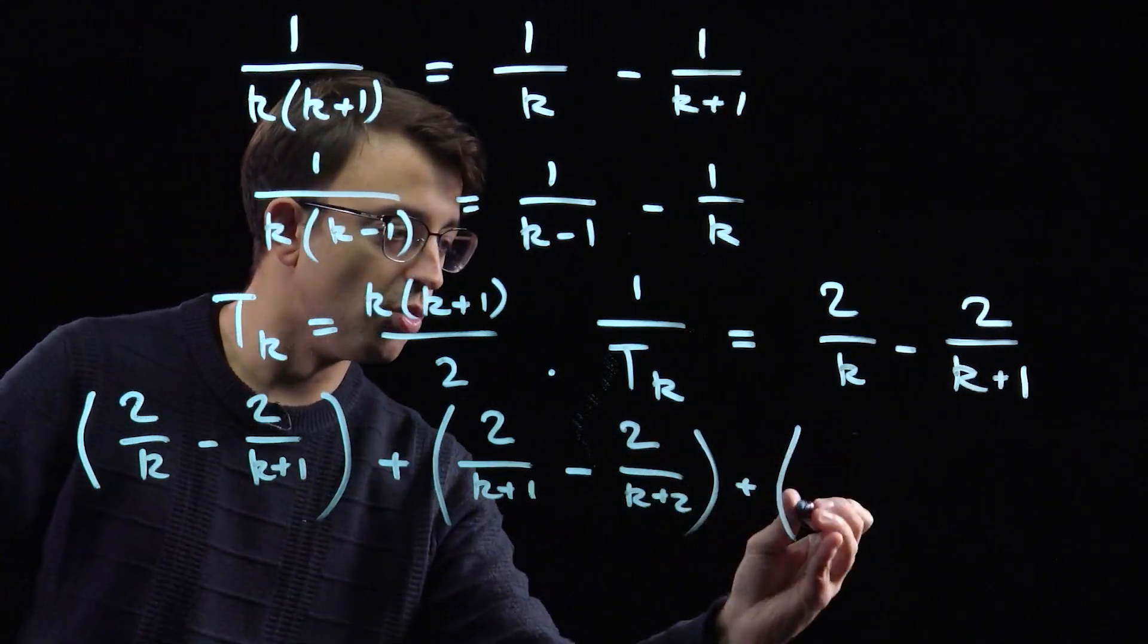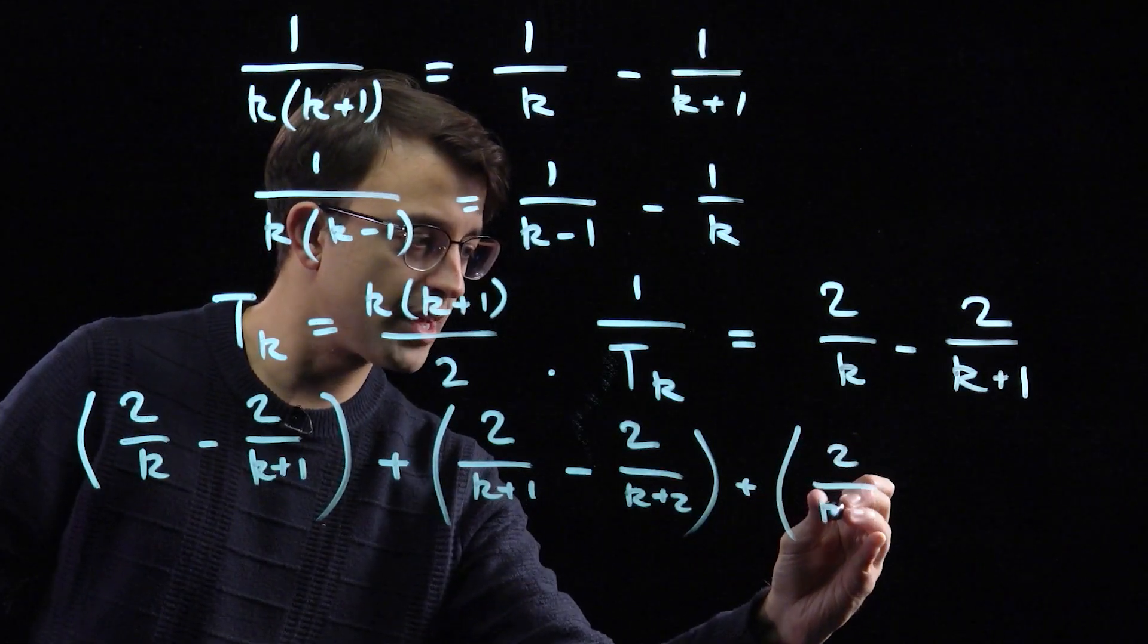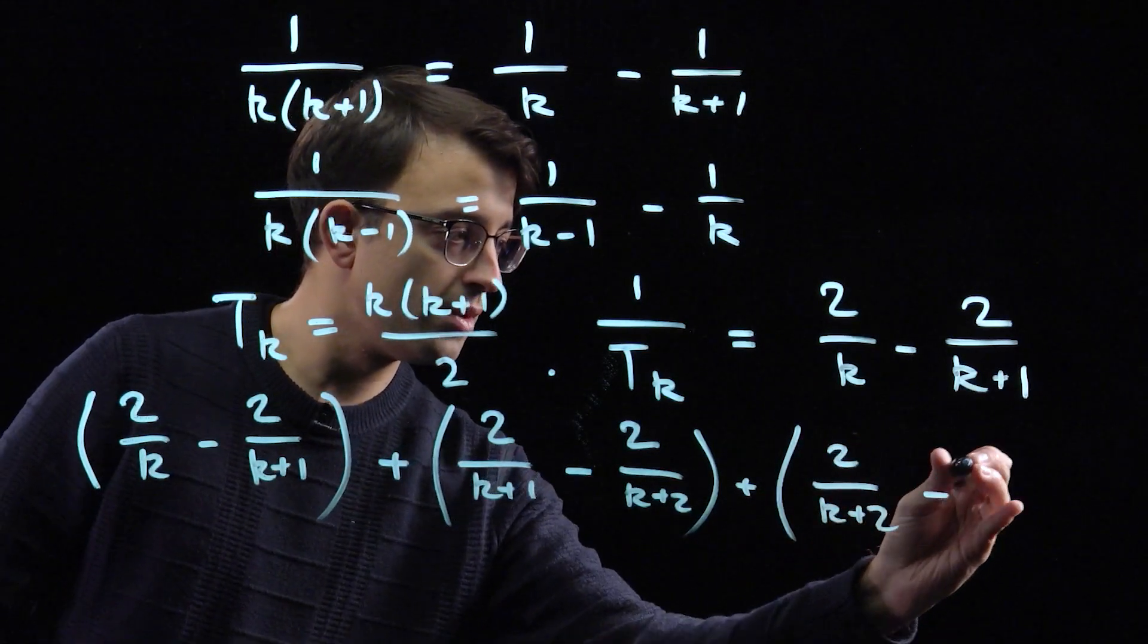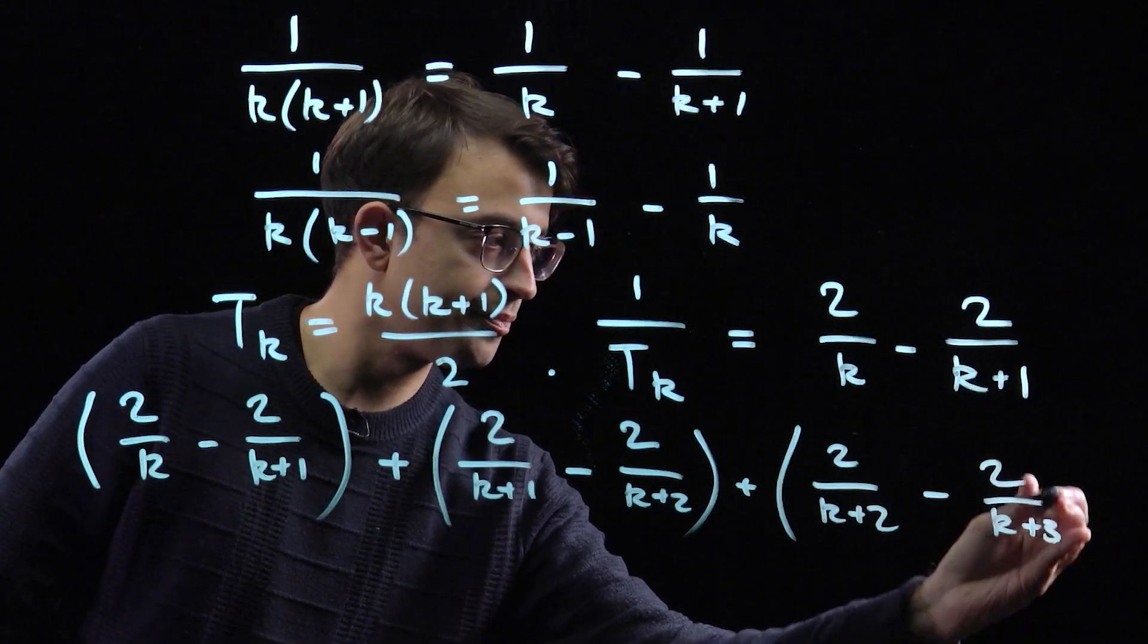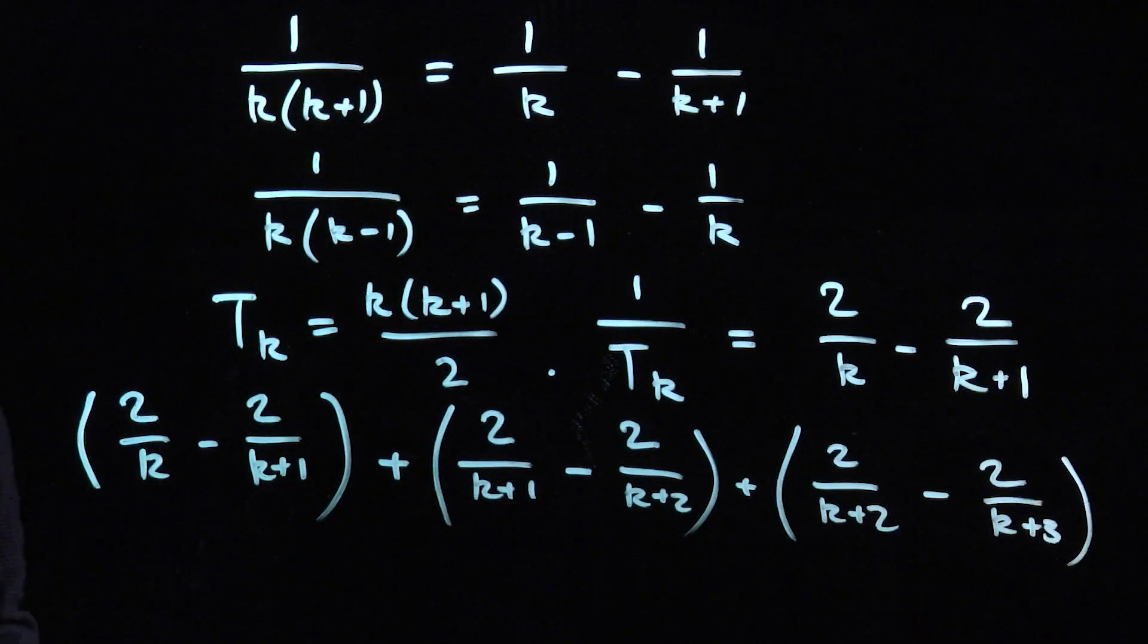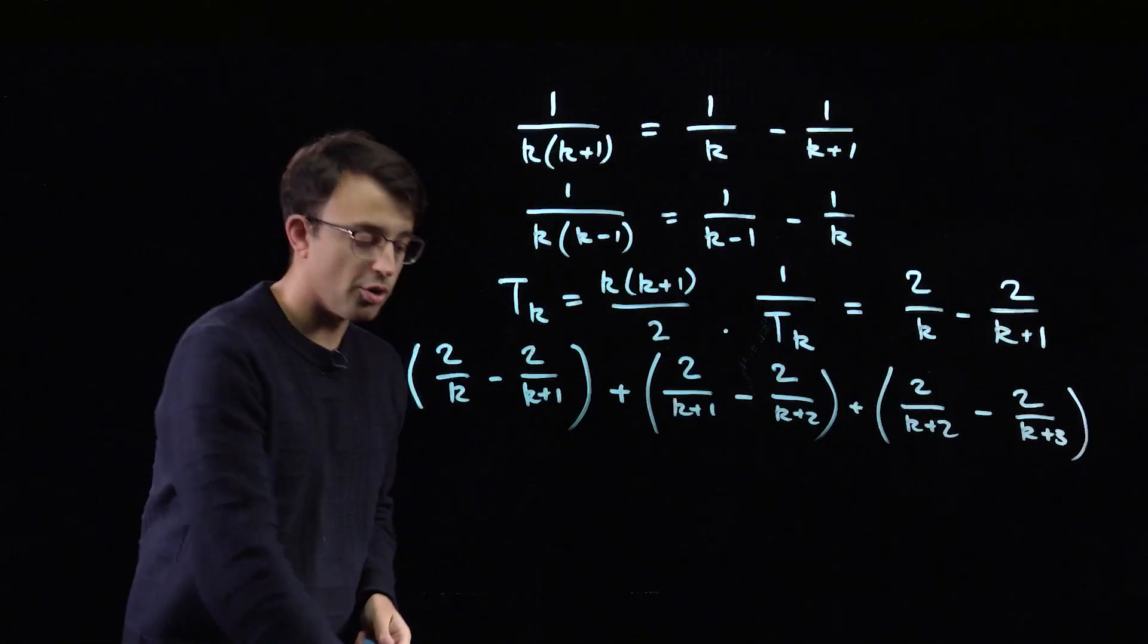And we'll have one more. 2 over k plus 2 minus 2 over k plus 3. And let's have a look at what's going on in this sum.